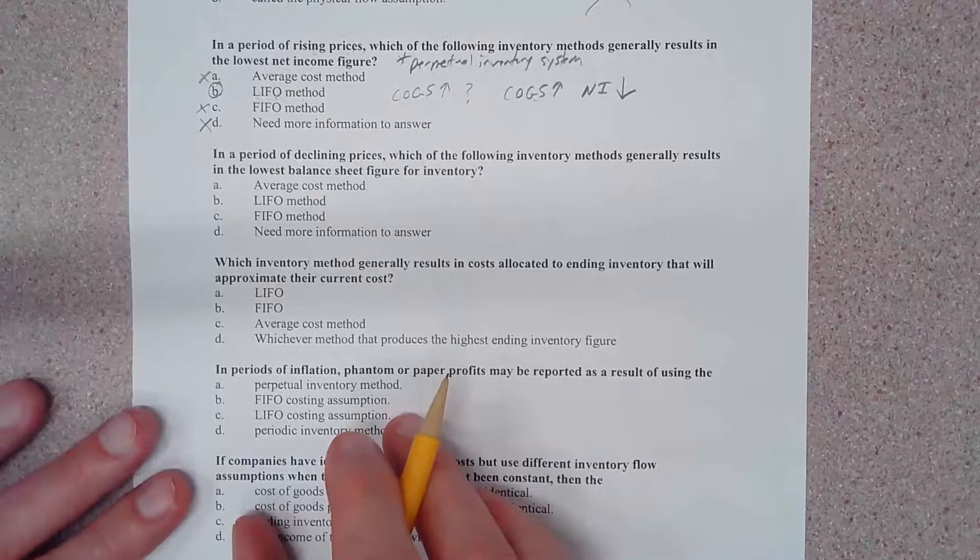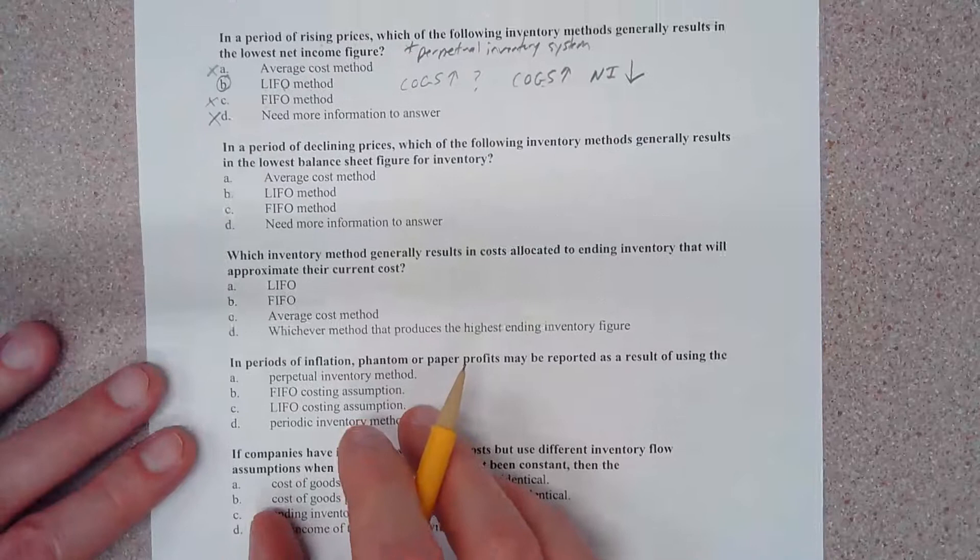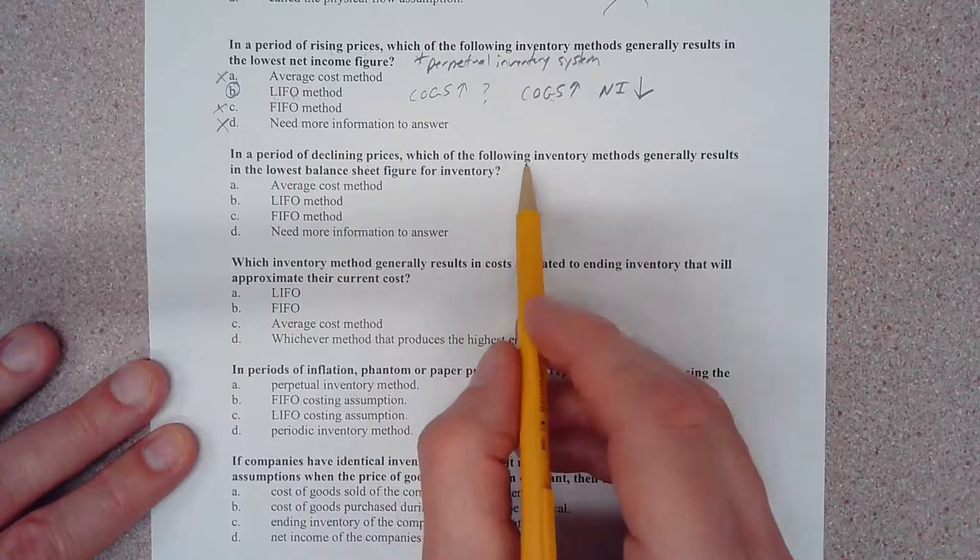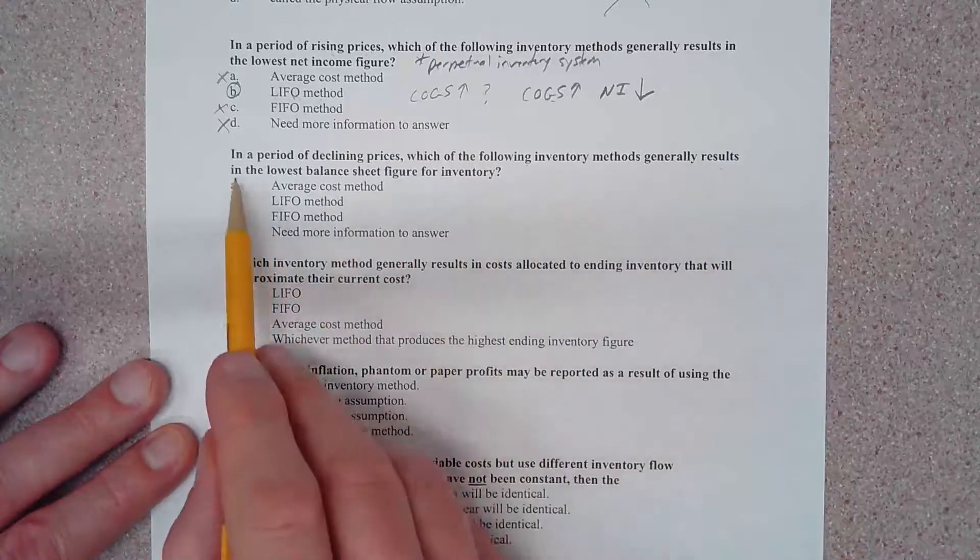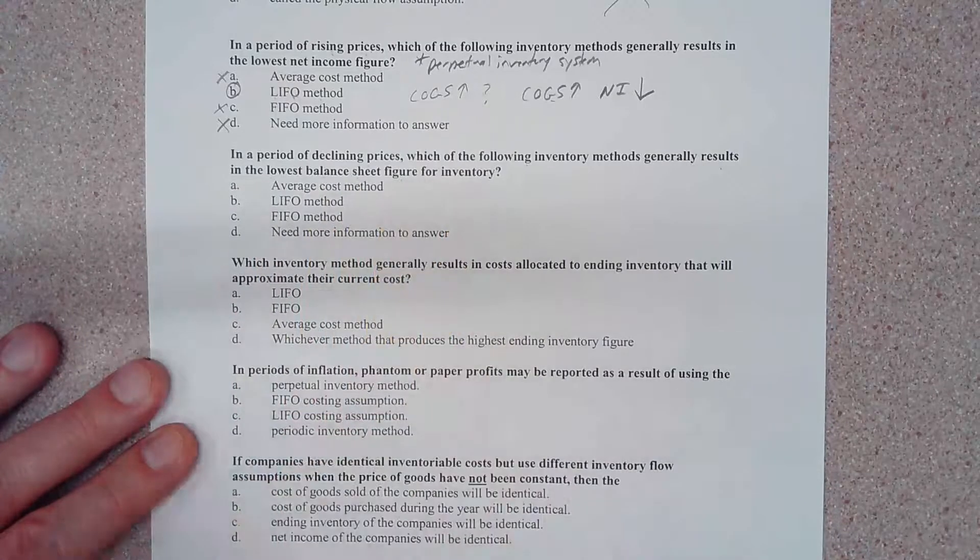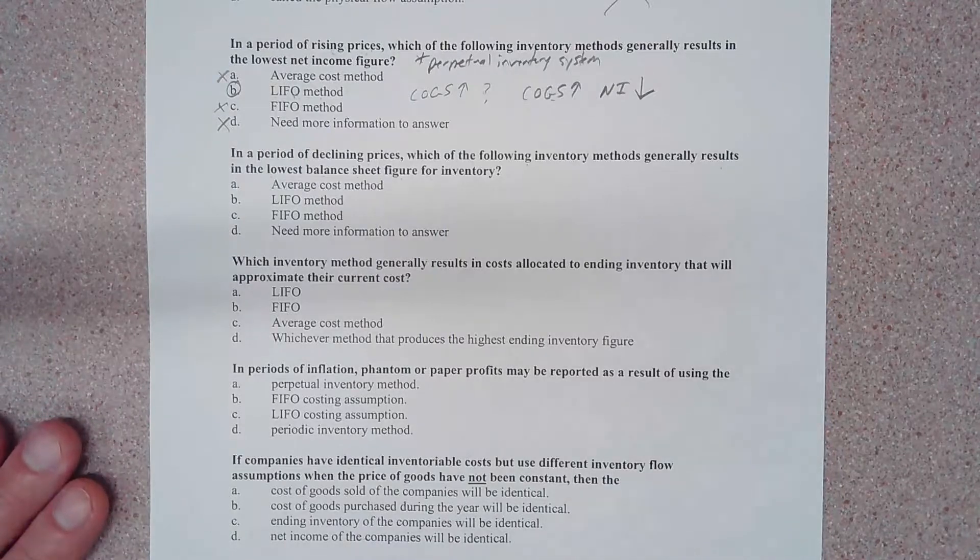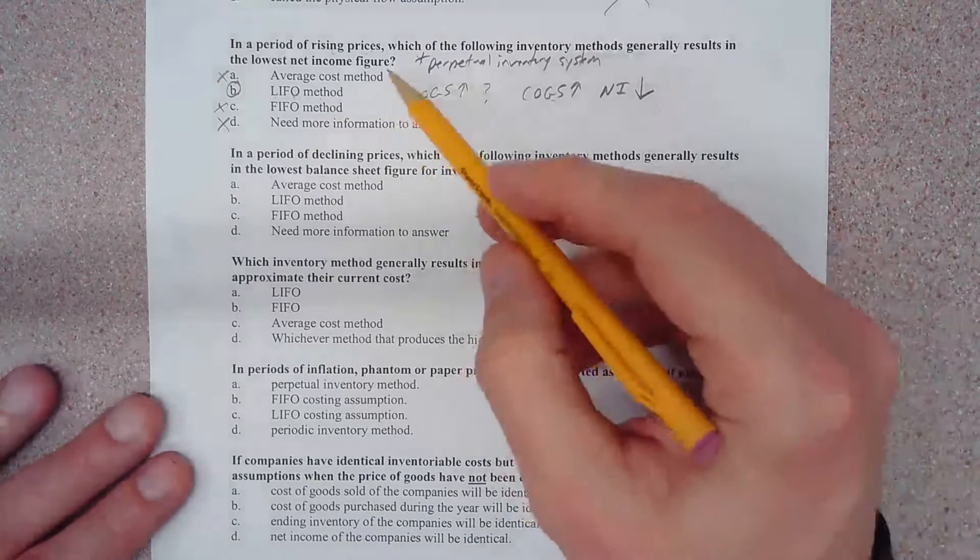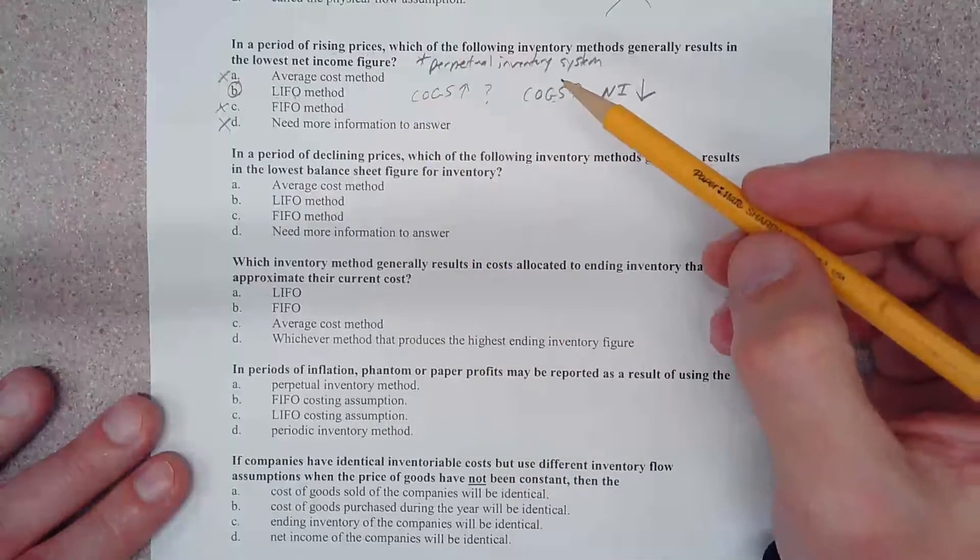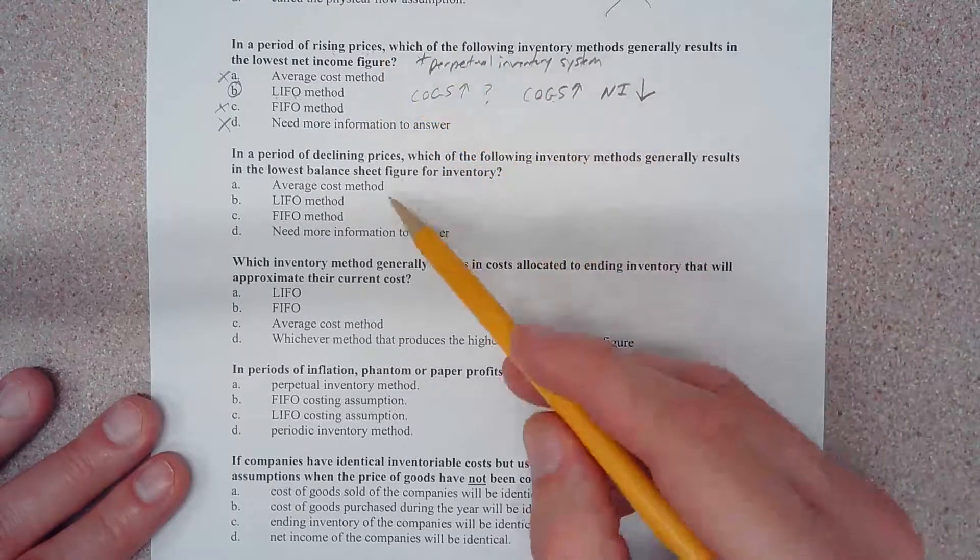Let's do one more. I almost skipped one here. We go: in a period of declining prices, which of the following inventory methods generally results in the lowest balance sheet figure for inventory? Okay, in a period of declining prices. So we had rising prices here and declining prices here, but be careful because in this question we were asking about net income, and here we're talking about ending inventory.